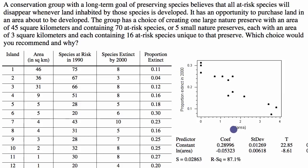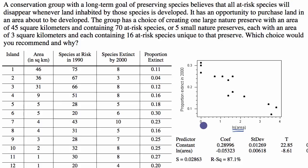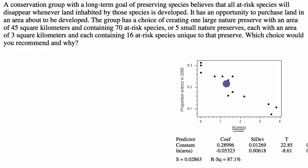The reason why it's valuable to do this type of transformation is that now we can apply our tools of linear regression to think about what the proportion extinct would be for the 45 square kilometer preserve versus for the five small three-kilometer islands. They give us the regression data for a line that fits this data.